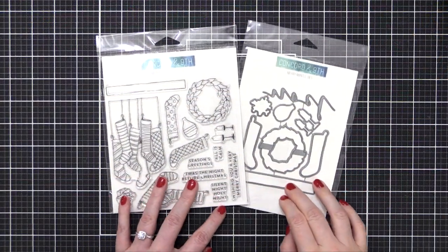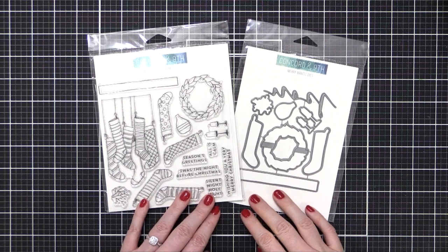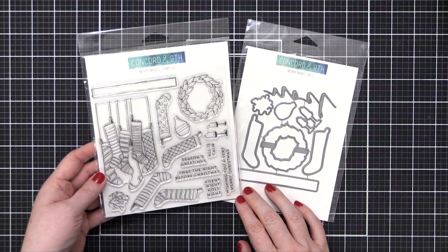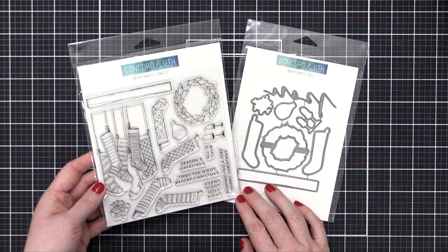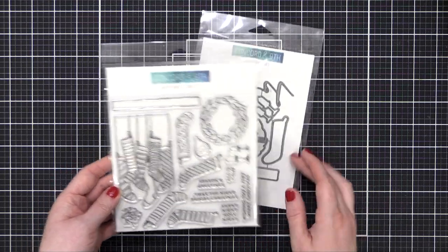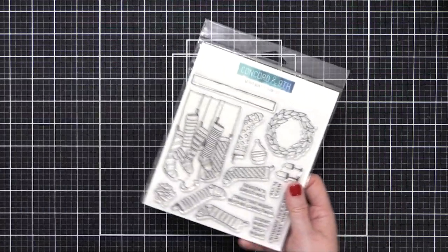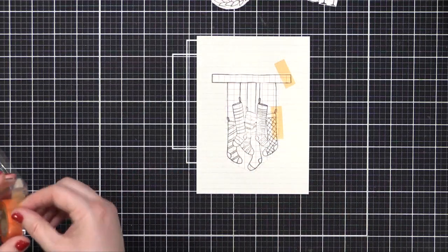Hi everyone, Christina here. Welcome to day 25 of the holiday card series for 2020. Can't believe we're at the very last day. For today's card, I'm using the Merry Mantle stamp set and the coordinating dies from Concord and Ninth.